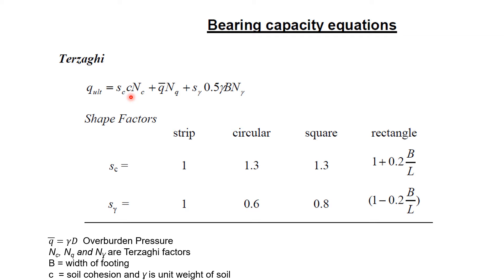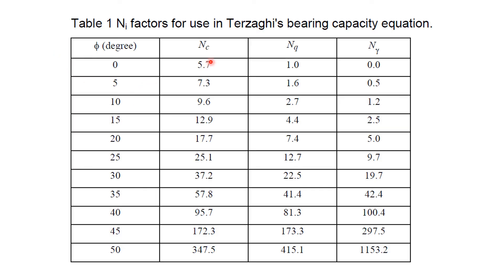c is the soil cohesion property, which comes from laboratory analysis. Nc, Nq, and N_gamma are the bearing capacity factors presented by Terzaghi. These factors depend upon the phi friction angle.